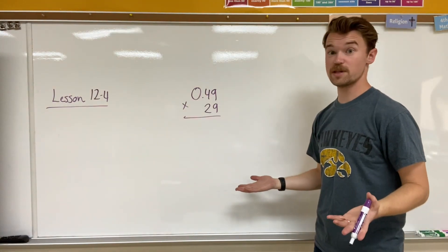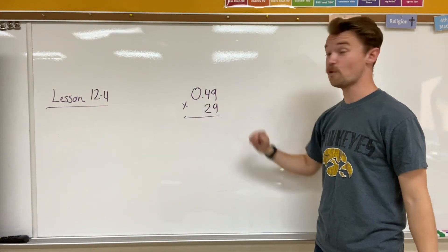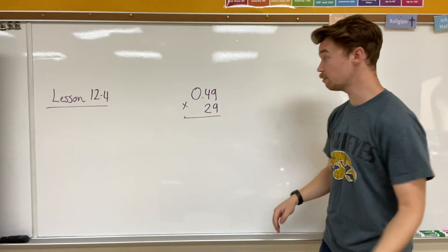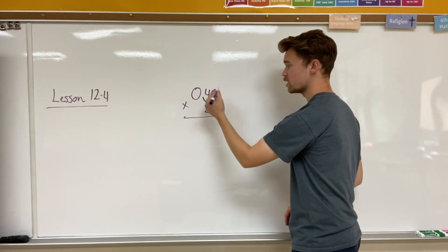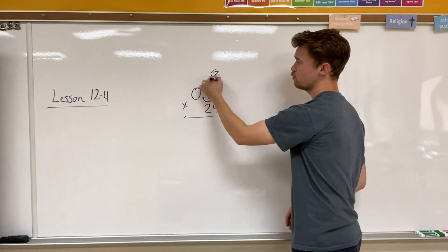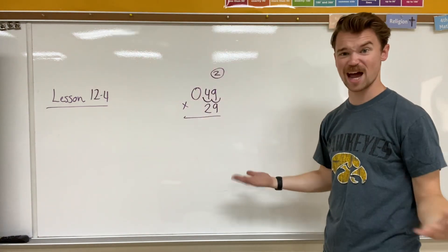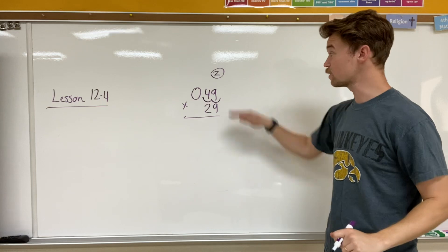Let's take a look at a decimal that's in the hundredths. So I have 0 and 49 hundredths times 29. Well, I'm going to take my decimal and move it to the end. One space, two space. If you need to, write a little two up here to remind yourself that you need to move it back over two spaces at the end. That's what I like to do.